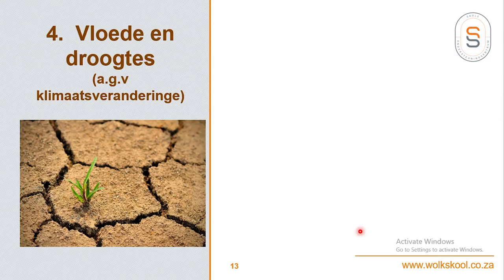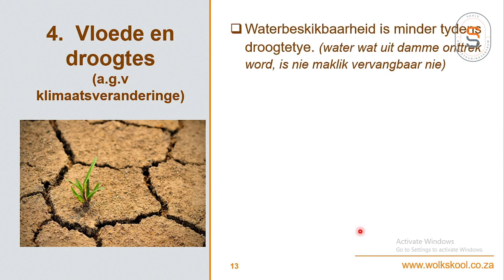Nommer 4 is vloede en droogtes. By droogtes is daar nie water beskikbaar vir die plante nie, dan word dit uit damme onttrek, en as dit nie reën nie word dit nie vervang nie. Interessant is dat die Vaaldam alreeds weer besig is om onder die 50% te beweeg want met COVID-19 gebruik ons absoluut baie water - ons weet ons moet hande was vir 20 sekondes. Maak maar die kraan toe terwyl jy die seep gebruik en maak hom dan weer oop as jy was - ons moet ook onthou om piekie water te bespaar.